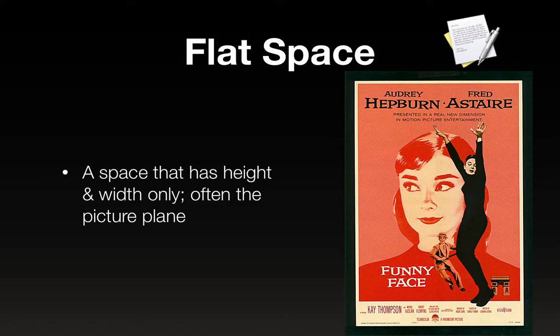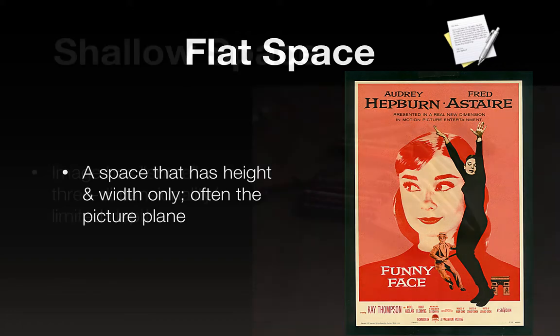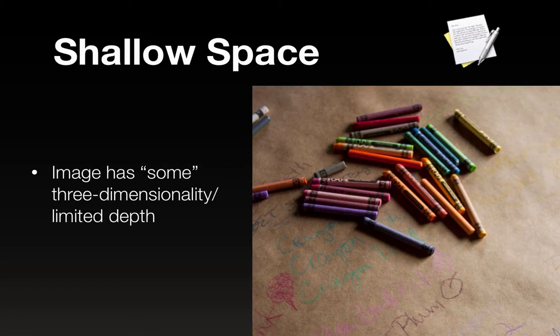A lot of what you've probably been doing falls into one of these three spaces. Flat space is a space that has height and width only — often the picture plane. Very graphic kinds of designs that might be typographical in nature or just have graphic elements. They're not really a scene with any depth beyond flat things overlapping other flat things. Shallow space is an image that has some three-dimensionality or limited depth — a little more depth than flat space, but not much.